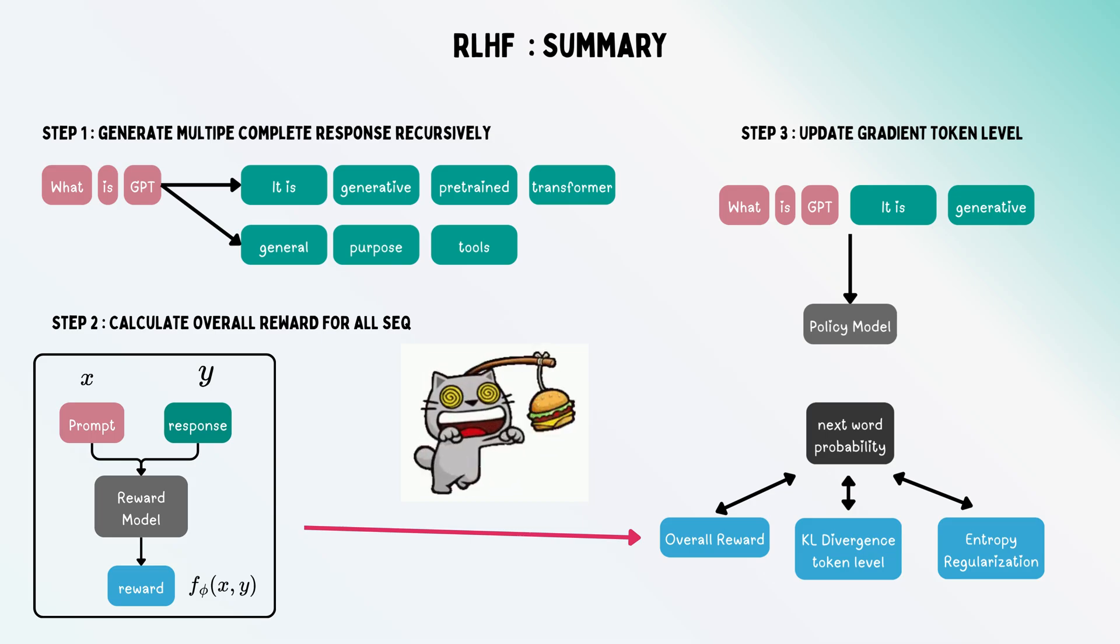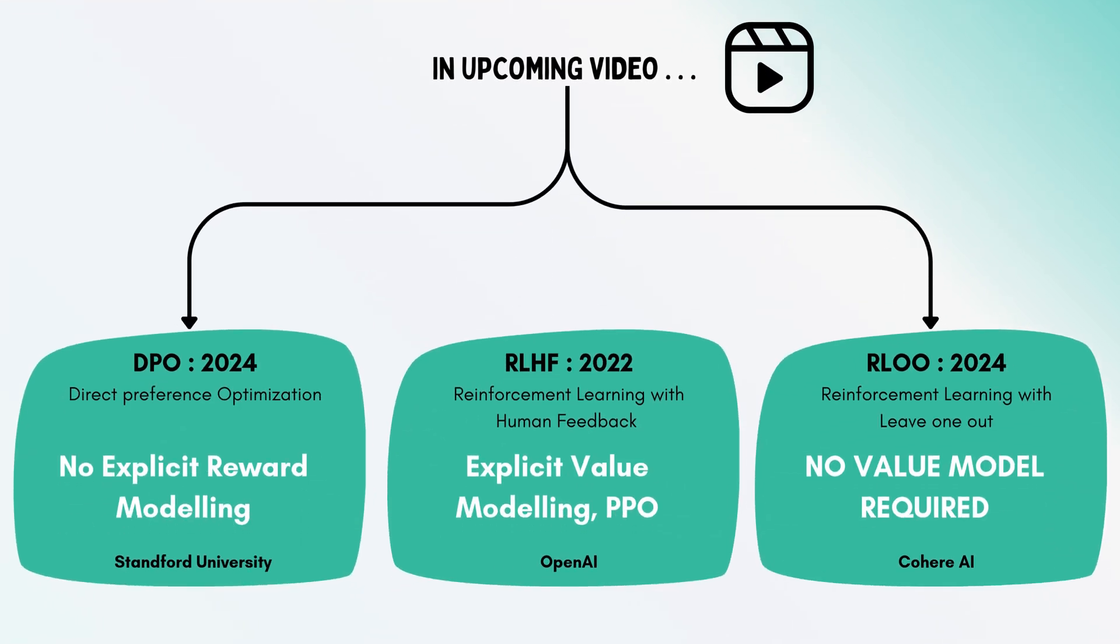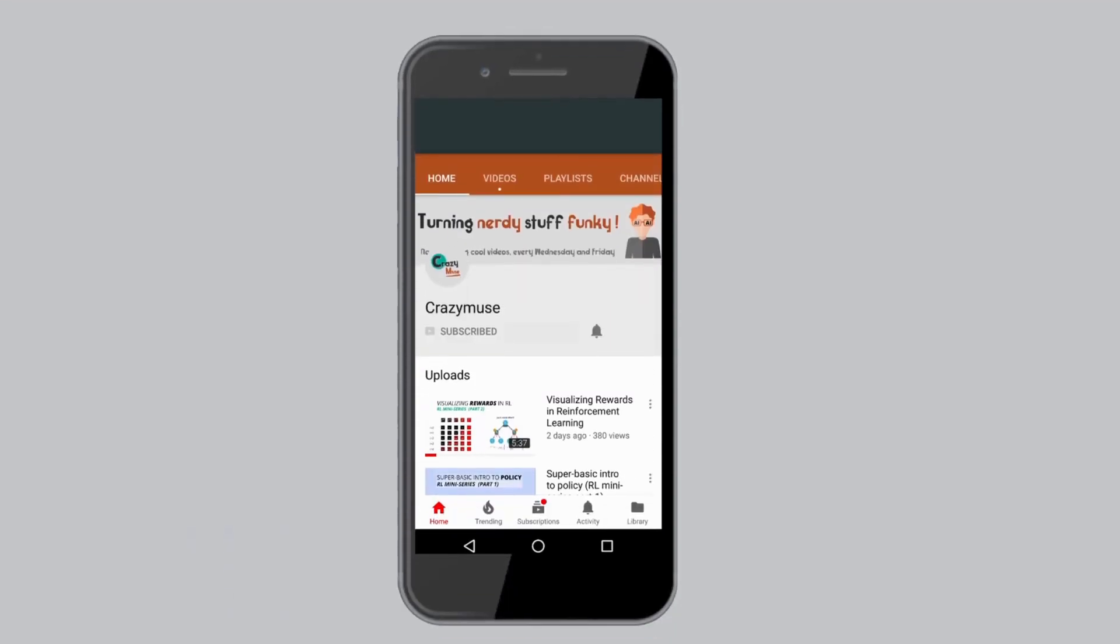Entropy regularization avoids making it overconfident around certain tokens or reducing the overall entropy of the token probability distribution. I hope this was useful. In the next videos, I'll talk about DPO (Direct Policy Optimization) and other techniques like RLO. Don't forget to subscribe and press the bell icon.